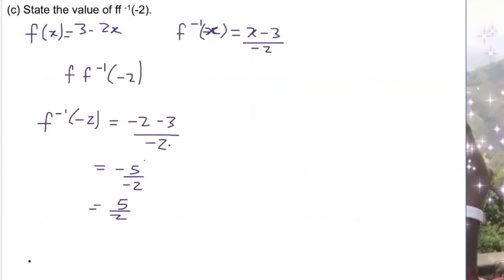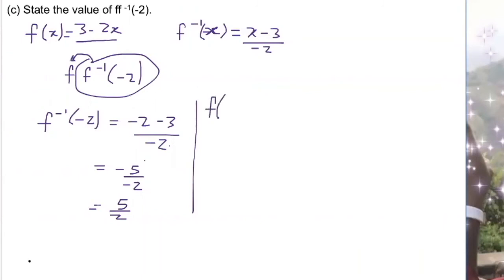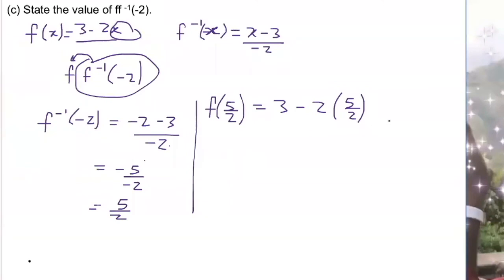Now substitute 5 over 2 into the function f. f(x) equals 3 minus 2x, so replacing x with 5 over 2: 3 minus 2 times (5 over 2). The 2s cancel, leaving 3 minus 5, which equals negative 2. So the answer for f(f⁻¹(−2)) is negative 2.